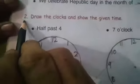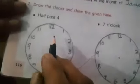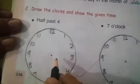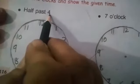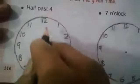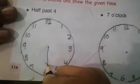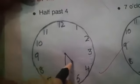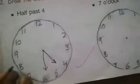Question number two: draw the clocks and show the given time. There are two clocks we have to draw and show the given time. The time is half past four. For half past four, the long hand will be on six and the short hand will be between four and five.